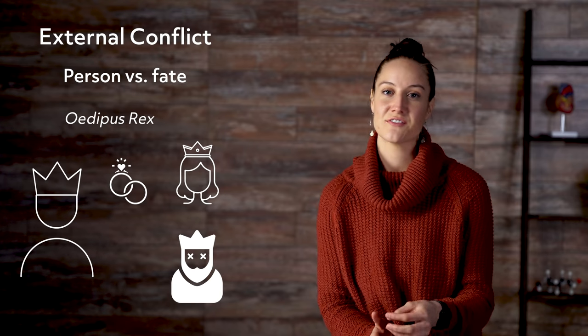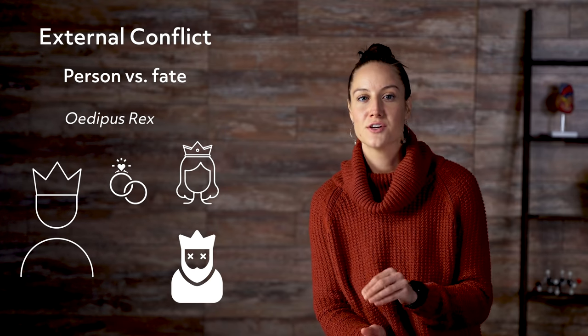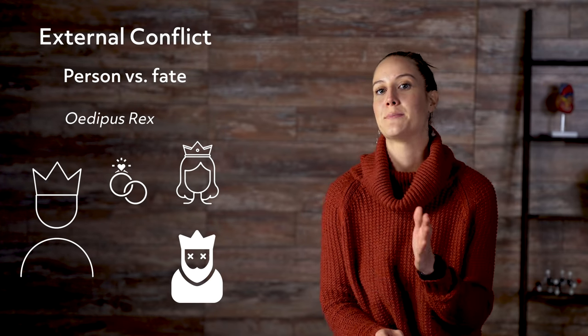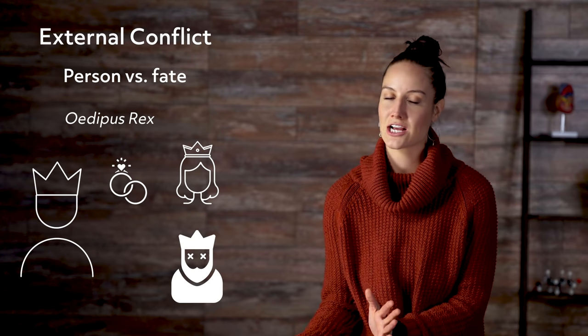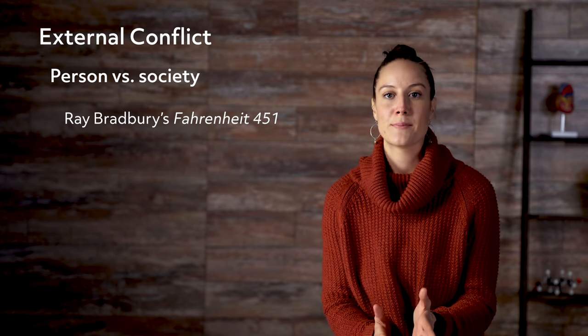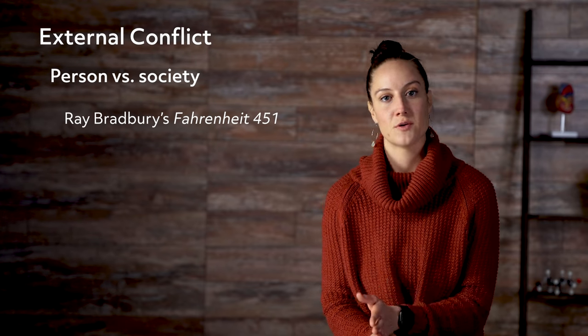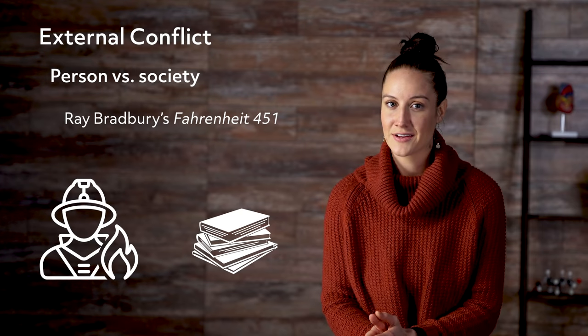In person vs. fate literary conflict, freedom and free will take a back seat to the unfolding action. The last major category of external conflict, person vs. society, occurs when a character struggles against the morays of their culture or government. Think of Ray Bradbury's Fahrenheit 451, where a fireman required to burn books ends up secretly collecting them instead.